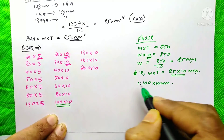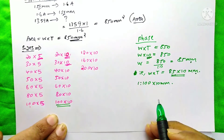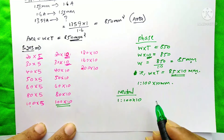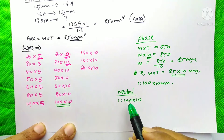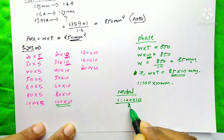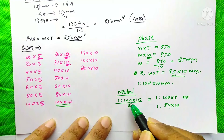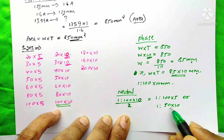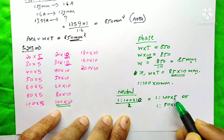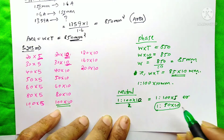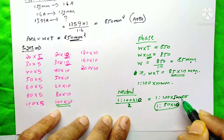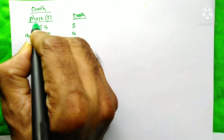We select 100×10 mm with 1 bus bar per phase. Now we size the neutral bus bar. For the neutral, we always use half of the phase bus bar. With the phase at 100×10, we have two options: make the width half — giving 50×10 mm — or make the thickness half — giving 100×5 mm. I recommend 50×10 mm because greater thickness improves lifetime.